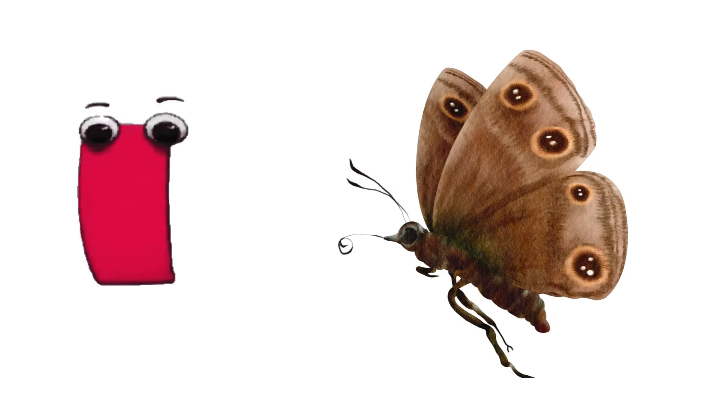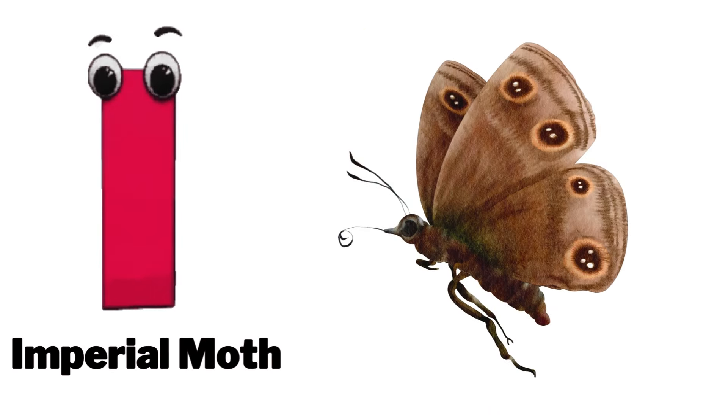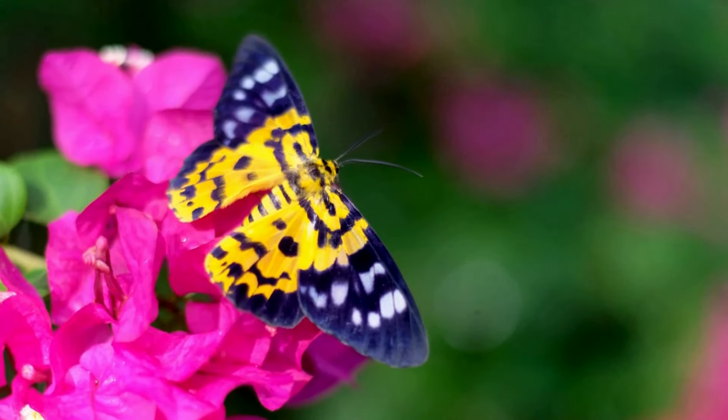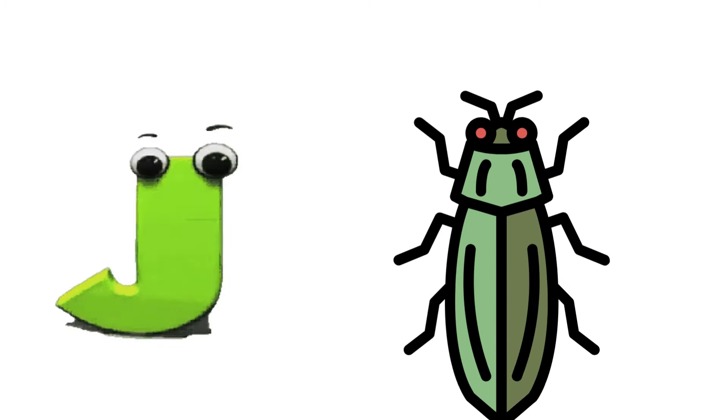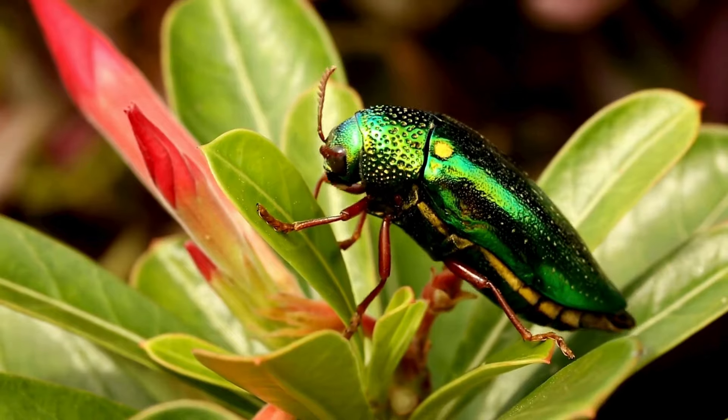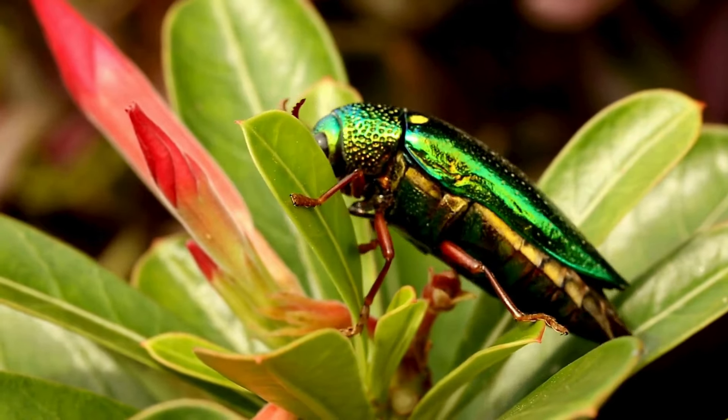I is for Imperial Moth. I. Imperial Moth. J is for Jewel Beetle. J. Jewel Beetle.